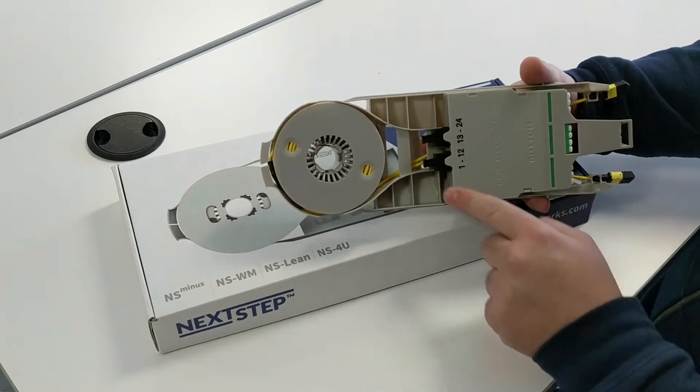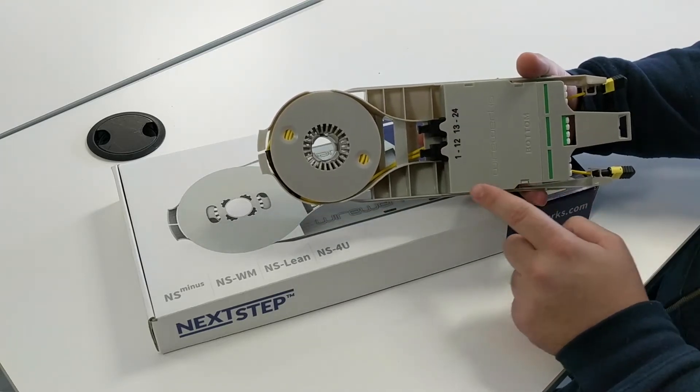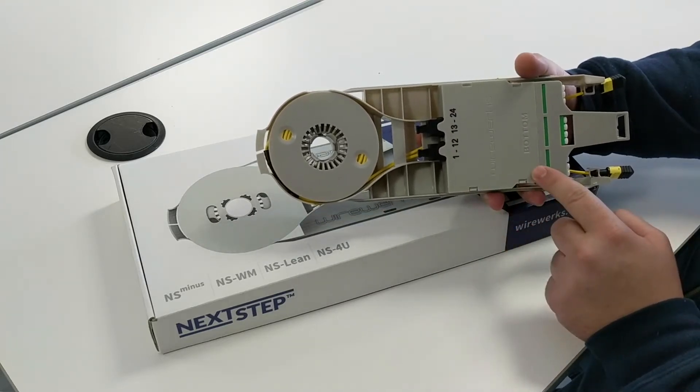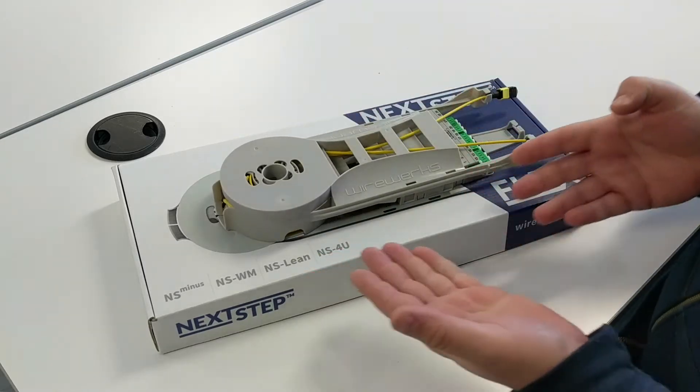It contains an integrated yet detachable LC or SC distribution module. If you require more than 30 meters of cabling, the cable assembly can be extendable up to 500 meters through the use of an open spool.